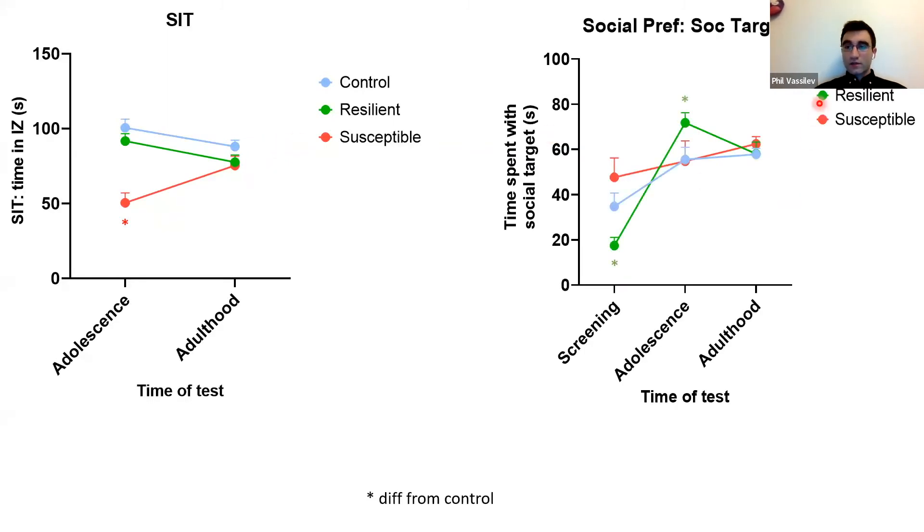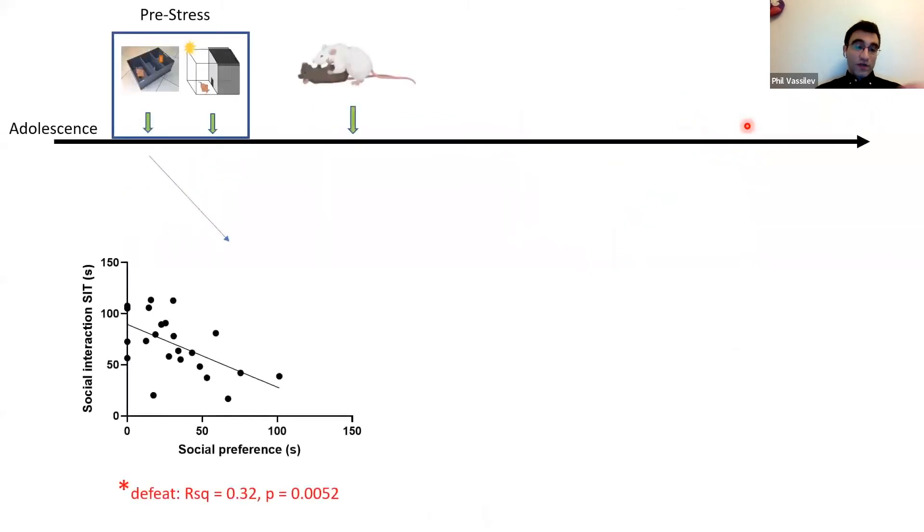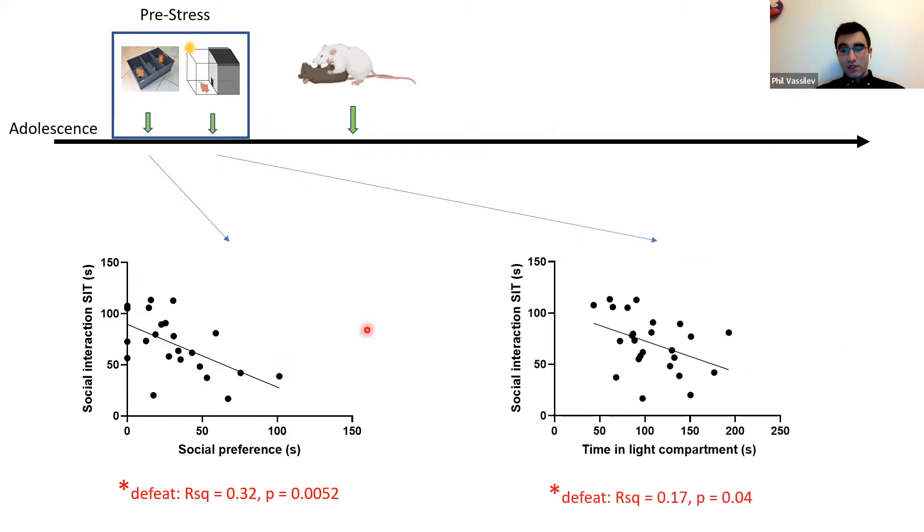In the social preference test, something interesting: before stress exposure, the resilient group has in fact lower social preference. They spend less time interacting with the social target than control and susceptible mice. Following social stress, they spend more time interacting with social targets, suggesting that specifically in the resilient group we have a distinct social preference profile across time. This is reflected in a negative correlation between social interaction and social preference, where lower social preference before stress predicts higher social interaction after stress exposure. The dark-light test pre-screening also revealed that more anxious mice, those that spend less time in the light compartment, tended to interact more in the social interaction test following exposure to social stress.